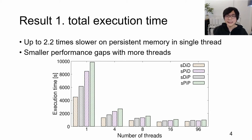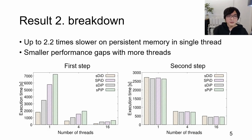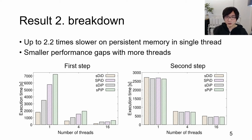The graph shows the breakdown of execution time for different numbers of threads. In the first step, we observed up to 3.8 times longer execution time on persistent memory than DRAM when the bulk loading was single-threaded. In the second step, the execution time was comparable.